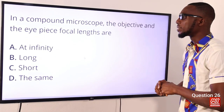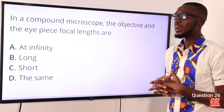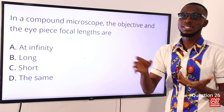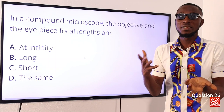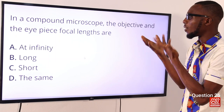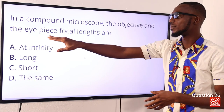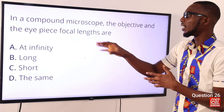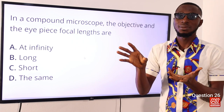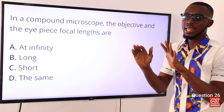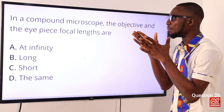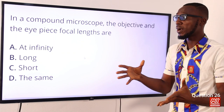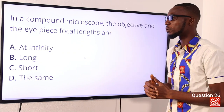Question 26: In a compound microscope, the objective and eyepiece focal lengths are both short. A compound microscope produces higher magnification than a simple microscope and comprises two convex lenses. The objective lens is closer to the object. Comparatively, the eyepiece has a slightly larger focal length than the objective, but both have short focal lengths. The correct option is option C for short focal length.